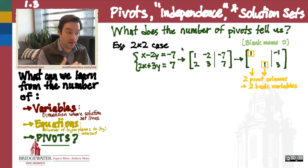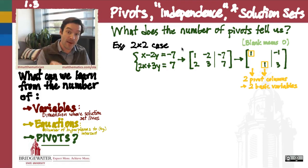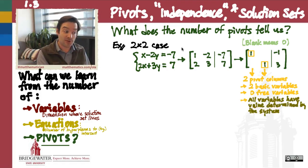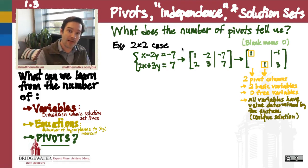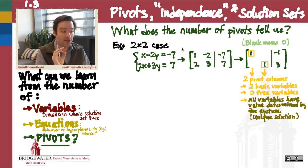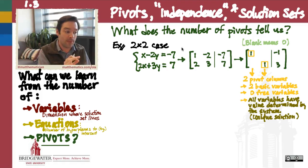That means that the variables corresponding to those columns are both what we call basic or bound variables. That means that there are no variables in my system which are free. And so in this particular system, all of our variables are basic, meaning that they all have their values determined completely by the system, and not by any free choice.